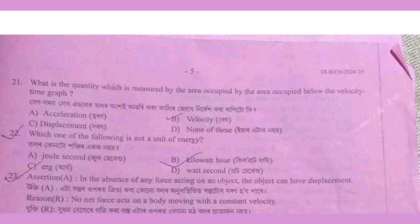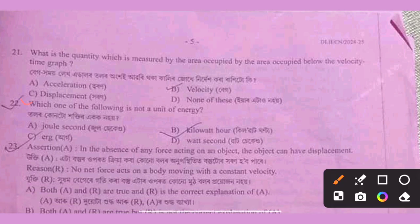The next question: what is the quantity measured by the area occupied below the velocity-time graph? If you look at this, you can see the answer is displacement. Option C.